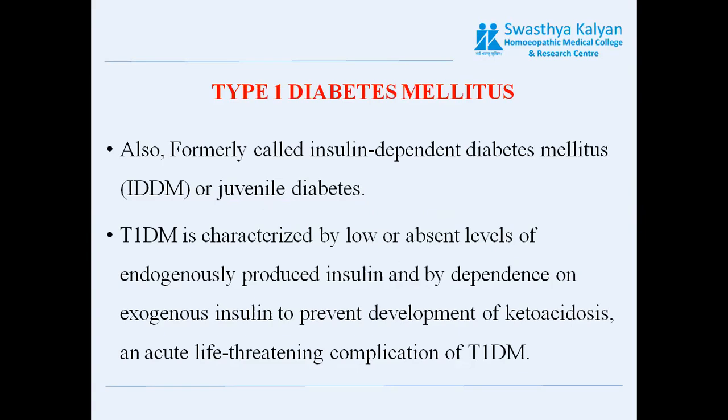Type 1 diabetes mellitus is also formally called insulin dependent diabetes mellitus, or juvenile diabetes. It is characterized by low or absent levels of endogenously produced insulin and dependence on exogenous insulin to prevent development of ketoacidosis.